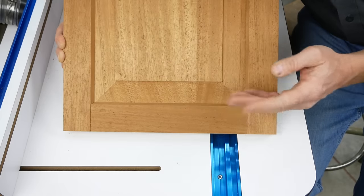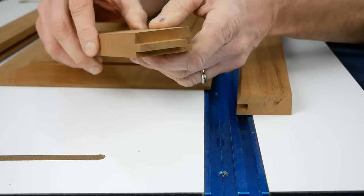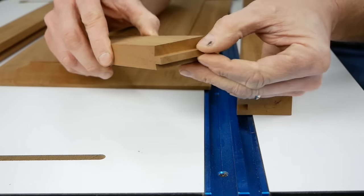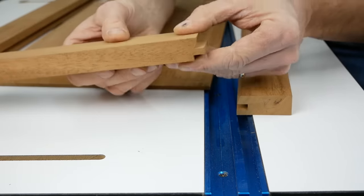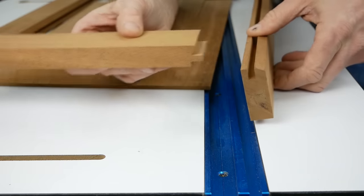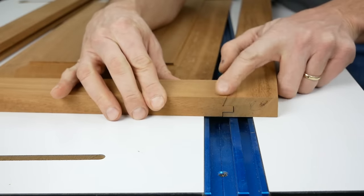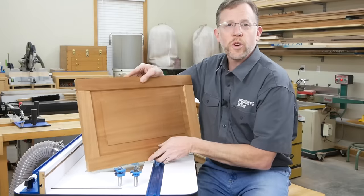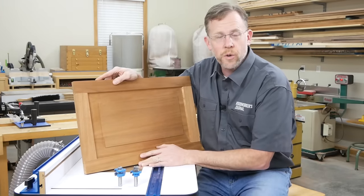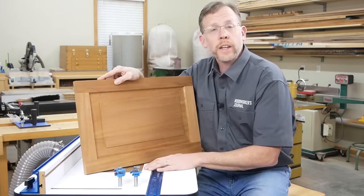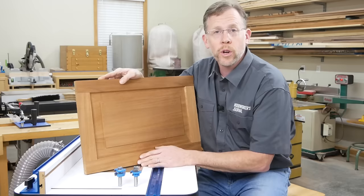If I take this cabinet door frame apart, the ends of the rails have this little tongue here, and that fits into the groove of the stiles to help lock these frames together at the corners with glue alone. These joints are often called cope and stick joints, and they make strong and attractive cabinet doors that are easy to build in a home shop.